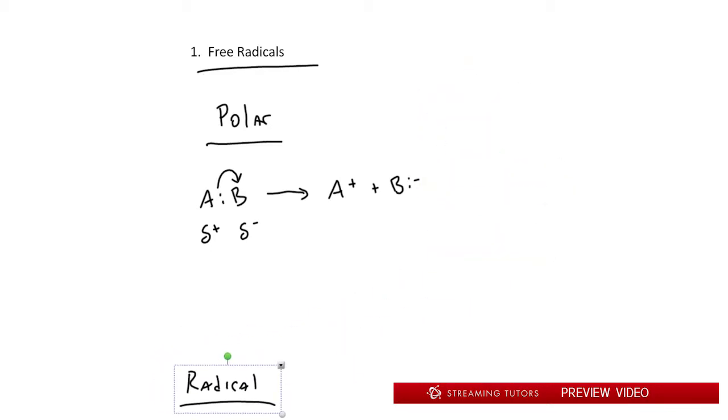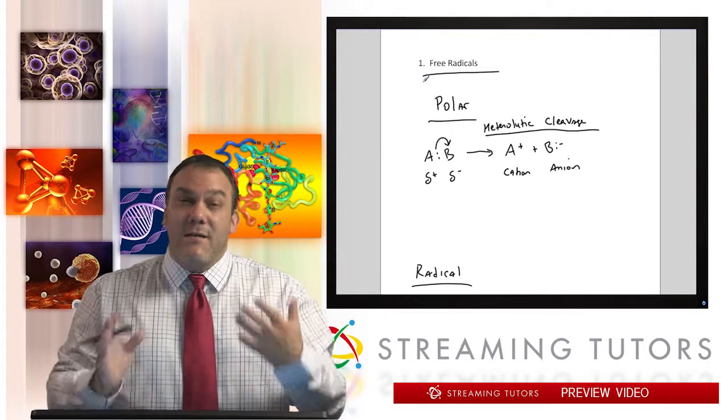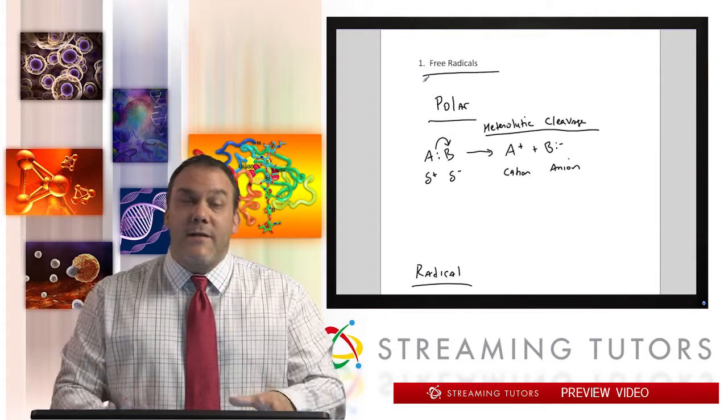This is called heterolytic cleavage. That means we have an unequal break—hetero is unequal, lytic means break—where one atom takes both electrons and leaves. That's how we get positive and negative: a cation and an anion. This is very popular. We've seen a lot of reactions related to this and we're going to see many more.